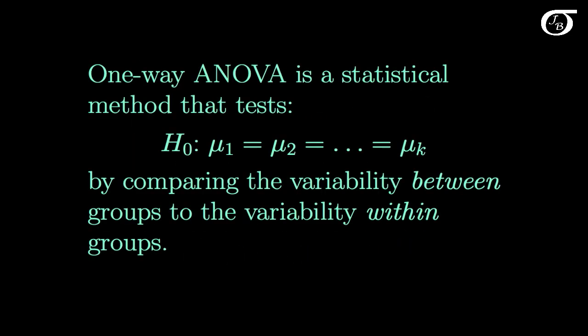One-way ANOVA is a statistical method that tests the null hypothesis that k populations all have the same mean by comparing the variability between groups to the variability within groups. Now it might not be immediately obvious what this means, so let's take a look at this visually.